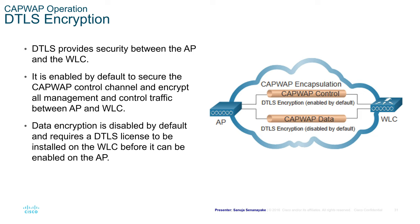DTLS encryption provides security between the access point and the WLC. It is enabled by default to secure the CAPWAP control tunnel and encrypt all management and control traffic between access point and WLC. Data encryption is disabled by default and requires a DTLS license to be installed on the WLC before it can be enabled on the AP.